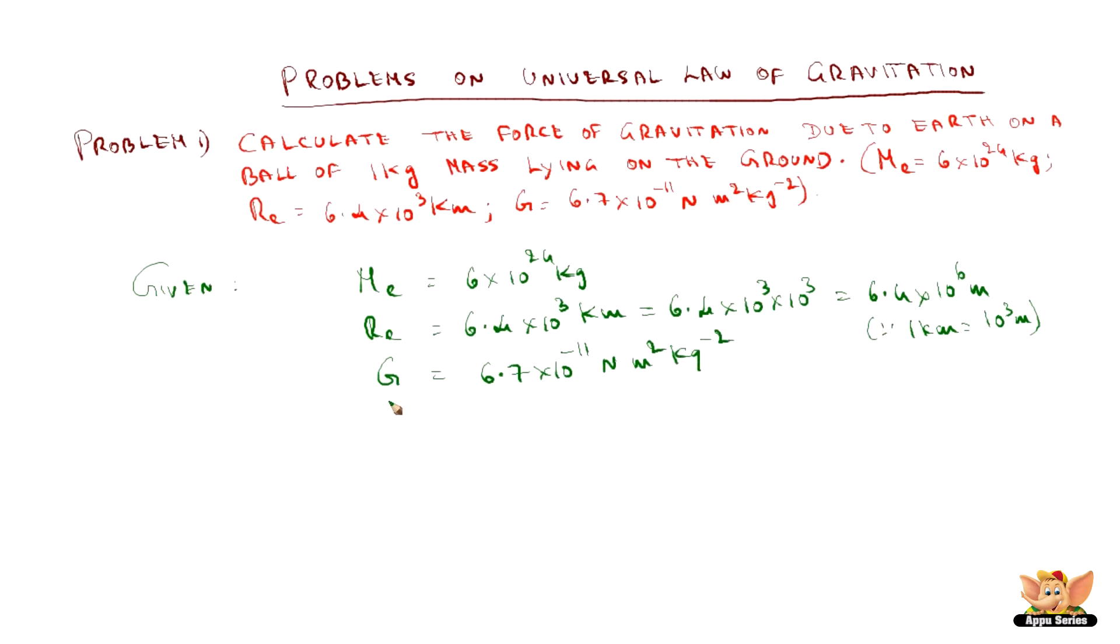Now we can calculate this from the Universal Law of Gravitation formula. The gravitational force F = G·m·M/r². We know the mass of the object is 1 kg, which is lying on the ground. So substituting the values we get...